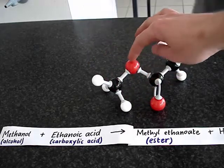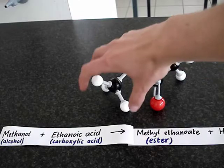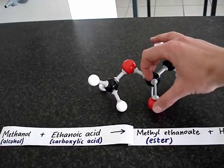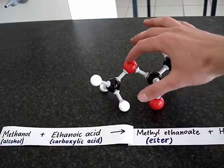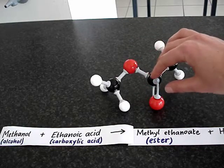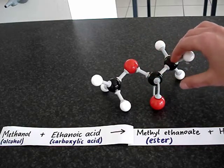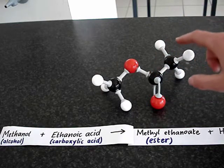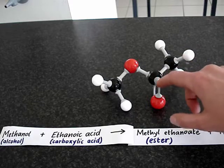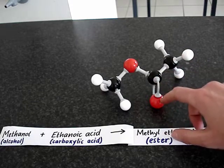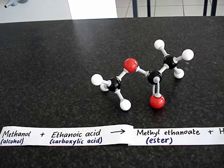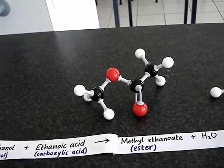And then here we have the bridging oxygen between what was previously the alcohol and what was previously the carboxylic acid. And then beyond the bridging oxygen, we have ethanoate. We can see the two carbon atoms telling us it's eth, and then we've got a double bond there between that carbon and that oxygen. And so all together, this here is called methyl ethanoate.